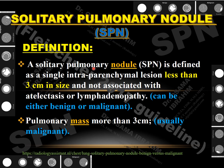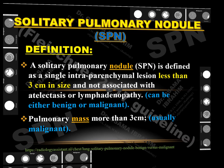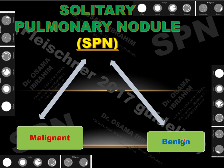The definition of a solitary pulmonary nodule: it should be less than 3 cm and not associated with atelectasis or lymphadenopathy. By this definition, it can be either benign or malignant. However, if the size becomes more than 3 cm, it is called a pulmonary mass, which is usually malignant. Our role as radiologists is to discriminate benign from malignant solitary pulmonary nodules.